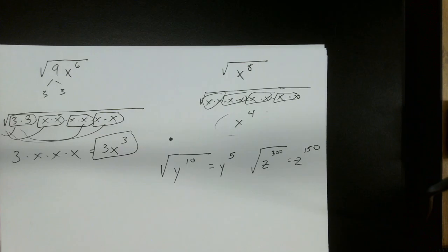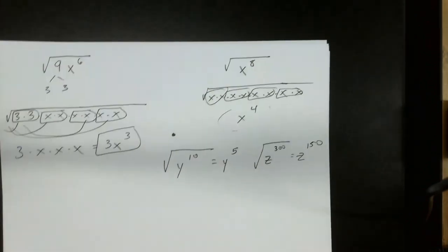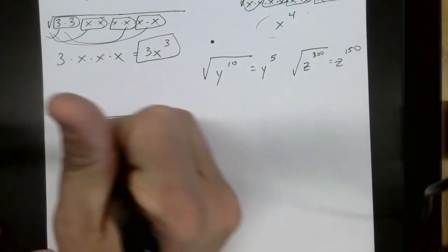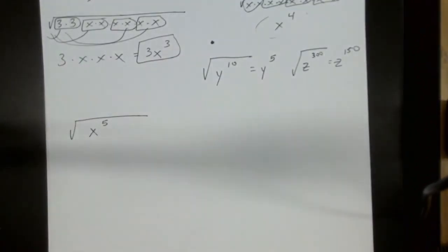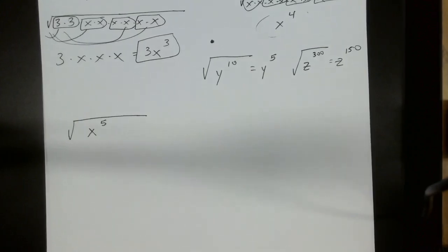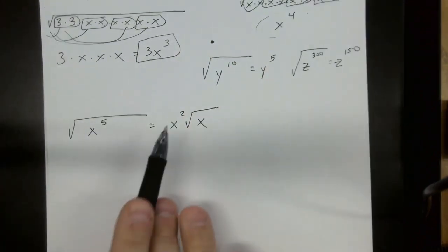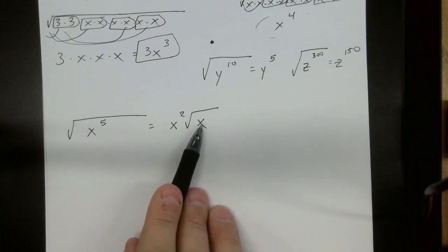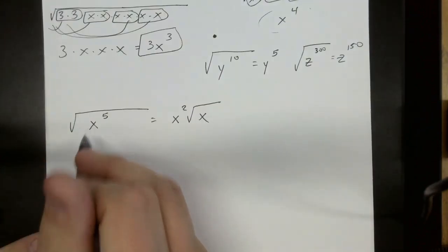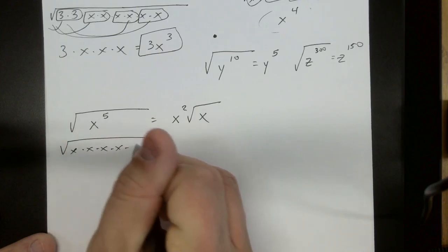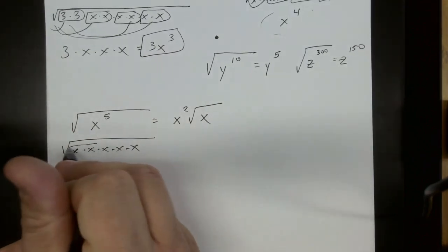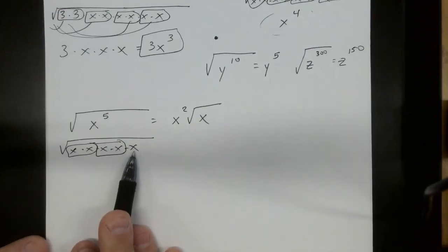The difference happens when we have an odd exponent. So if they're even exponents like all these we've done, they're pretty easy. But if we happen to have, like, x to the 5th, how many times does 2 go into 5? 2 times, right? 2 goes into 5 two times with a remainder of 1. So if it's an odd exponent, you're always going to just have the lone variable underneath the square root. If you think about it this way, if we happen to factor this, it would be 5 x's, right? Which means we'd have two pairs with one left over underneath.